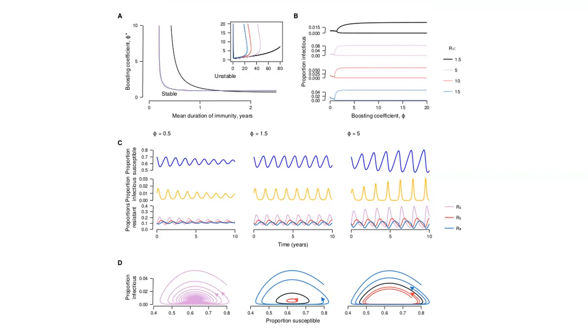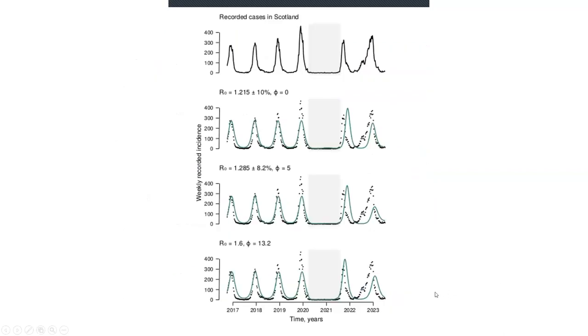What you end up finding is, if you look at the top plots, these are recorded RSV cases in Scotland from before the COVID pandemic, during the period when we were locked down and no one got infected, and then you see the rebound infections at the end.